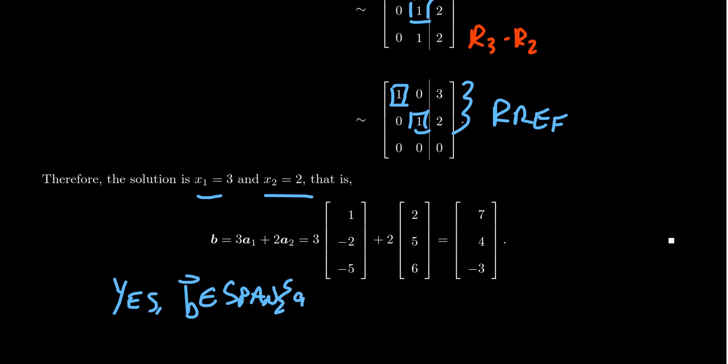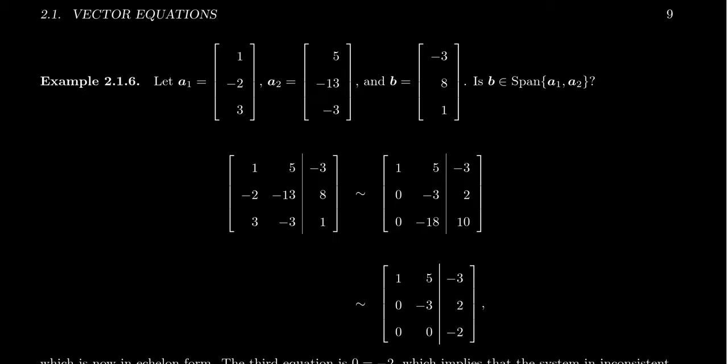of these vectors, a1 and a2. It just comes down to checking. To be inside the span means that you're a linear combination of said vectors. And that comes down to solving the associated linear system. Let's do another example of this.